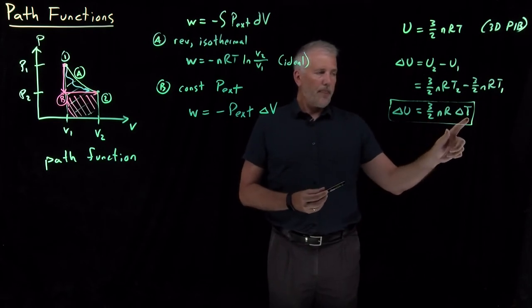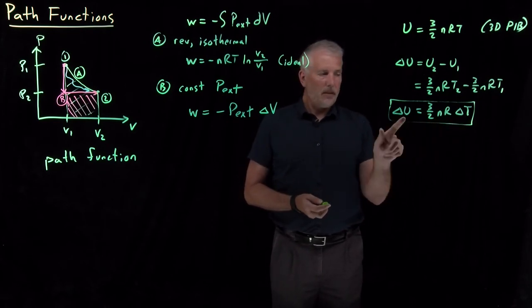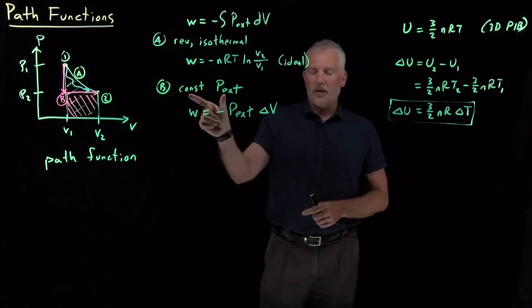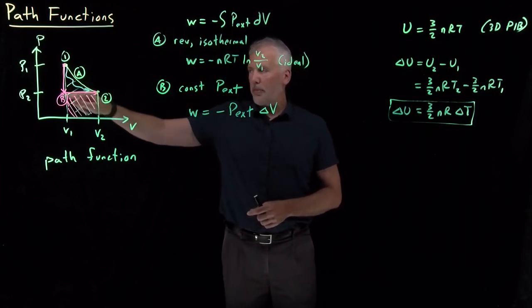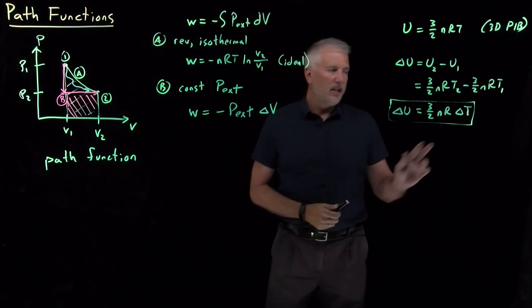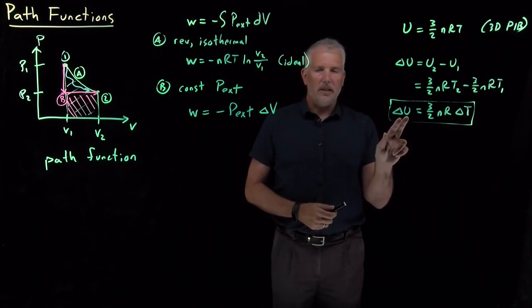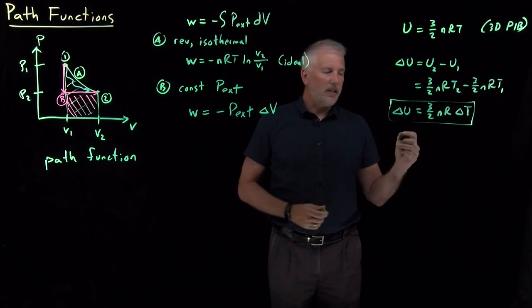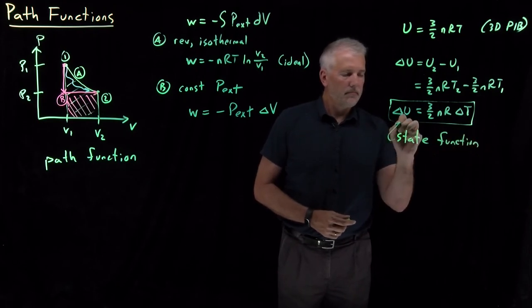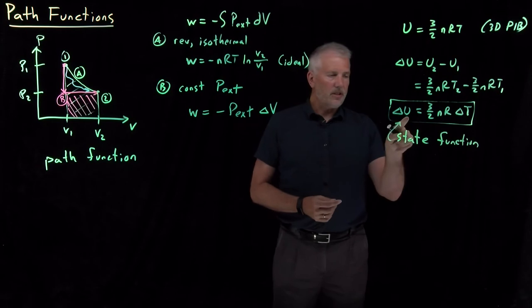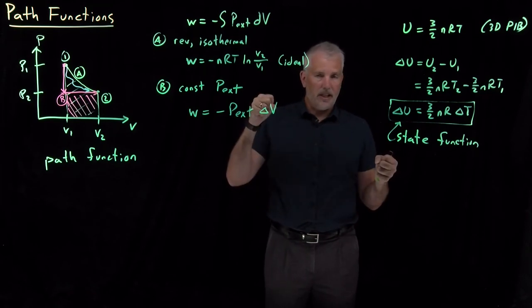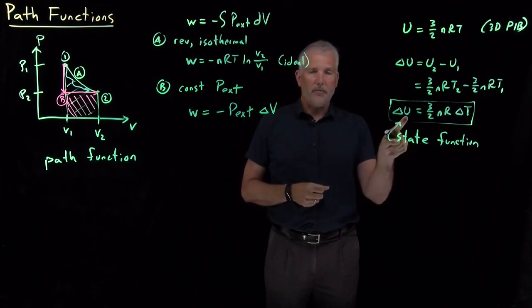The change in energy — if I know the change in temperature, I can immediately use that to calculate the change in energy. Notice it has nothing to do with whether I've taken a reversible isothermal path or a constant pressure path, whether it's path A, path B, or any other path. All I need to know is the temperature difference between the final state and the initial state, and that temperature difference is enough to tell me the change in energy.